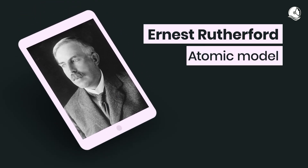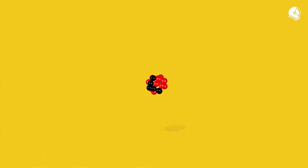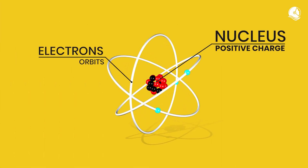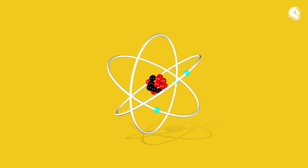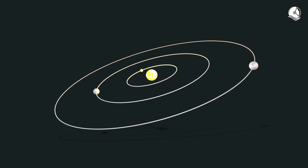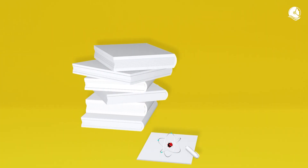When Rutherford came up with a model to describe an atom in 1911, he placed the nucleus — a highly dense central positive charge which has most of the mass of the atom — at the centre. Around this charged region, electrons would revolve like planets revolve around the sun. This model is probably the most famous one and appears frequently in textbooks.